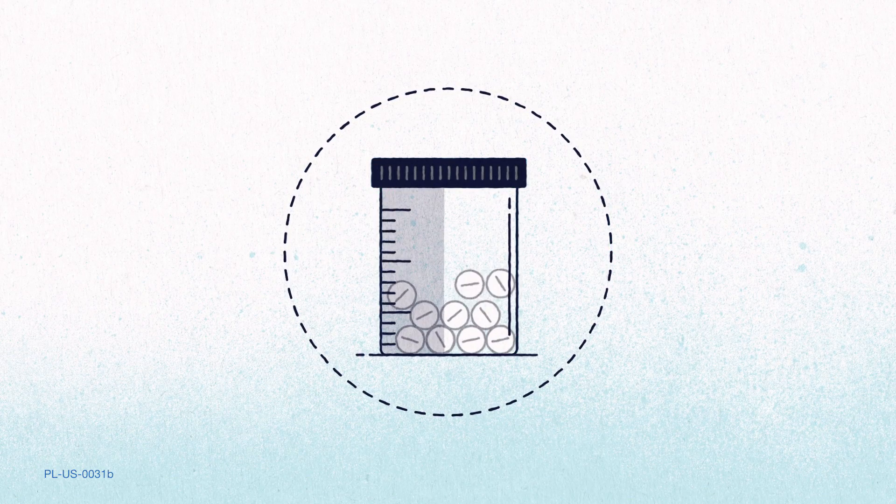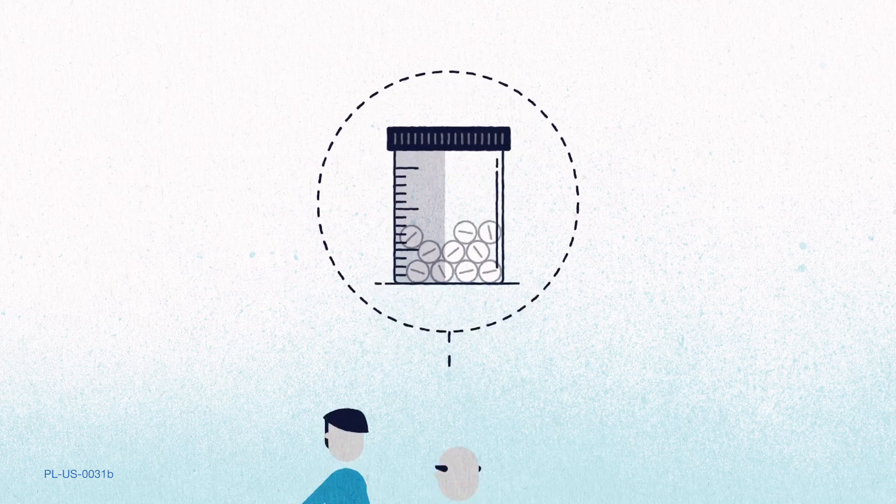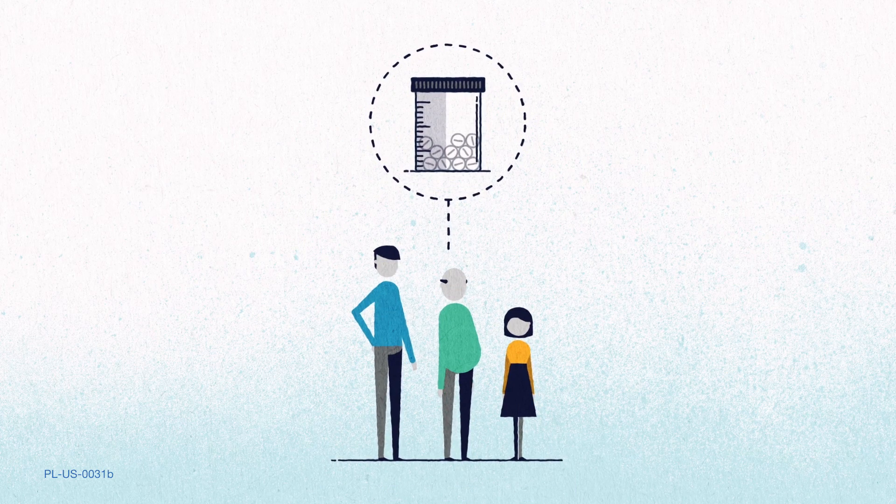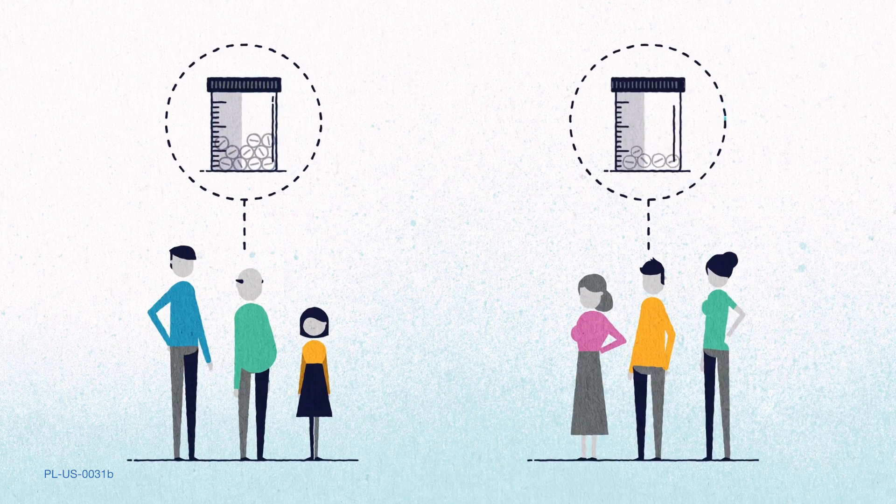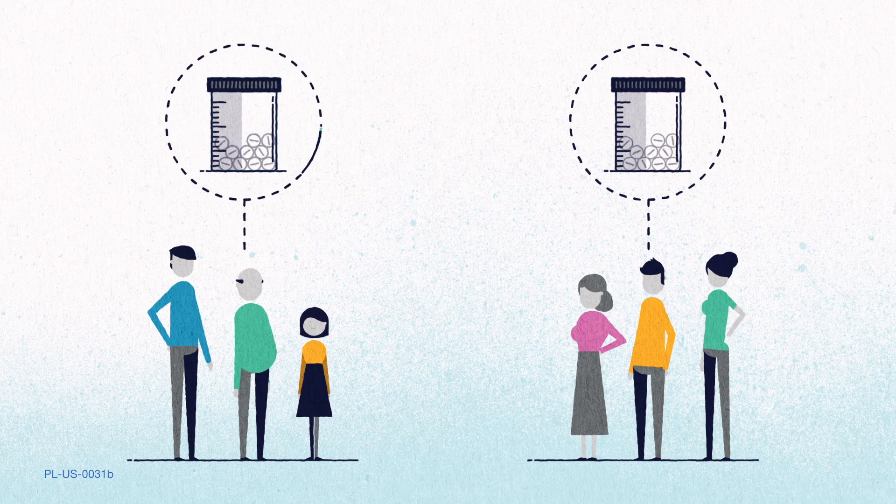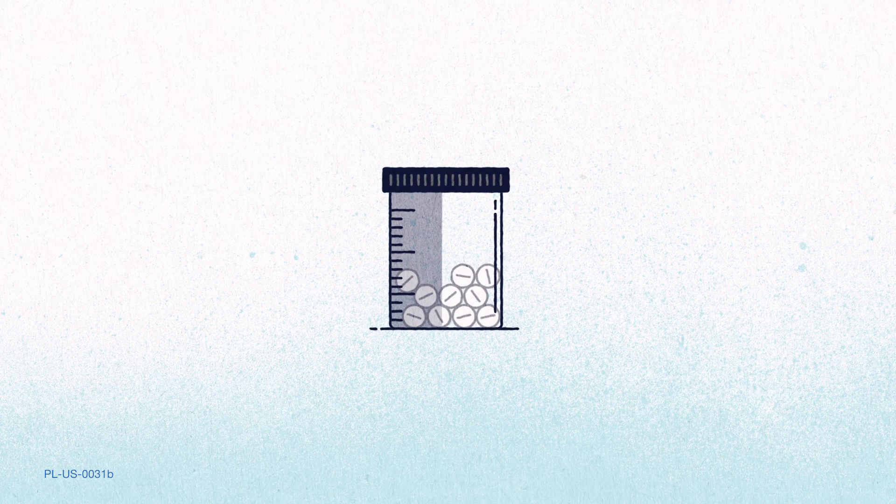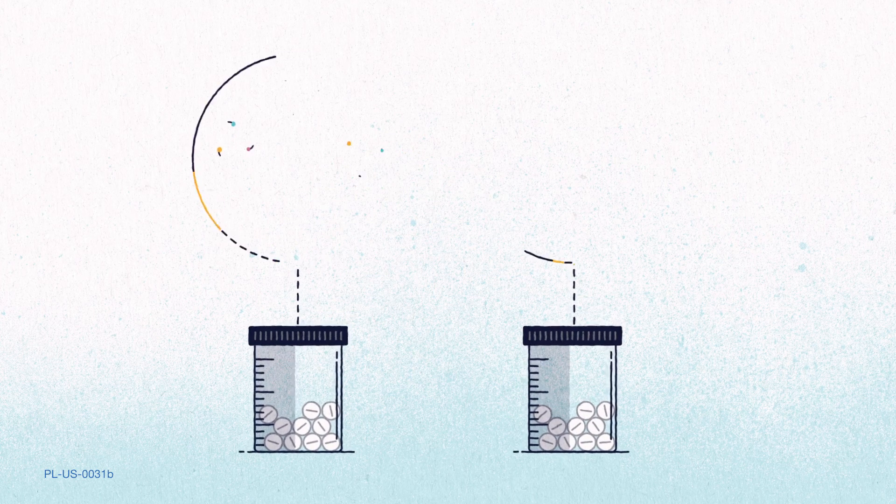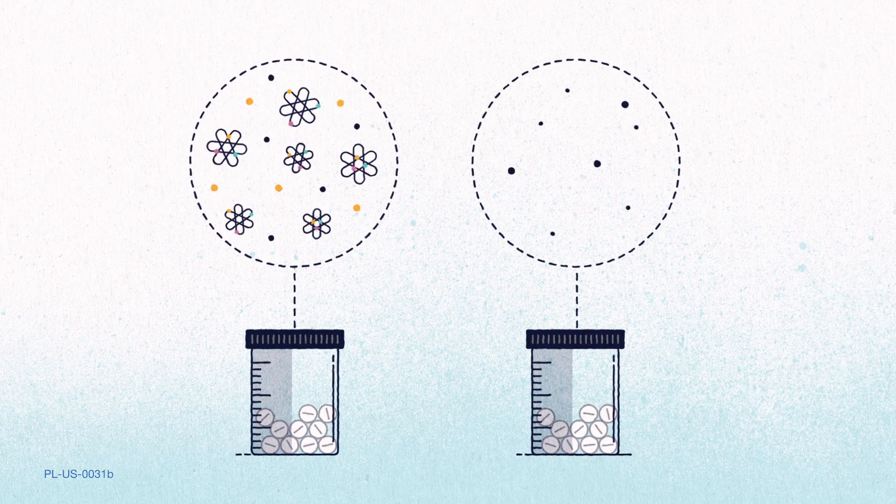It happens like this. To study the effects of an investigational drug, we may give one group of people the investigational drug and another a placebo. They won't know which. Both look the same and are taken in the same way, but the placebo contains no active drug.